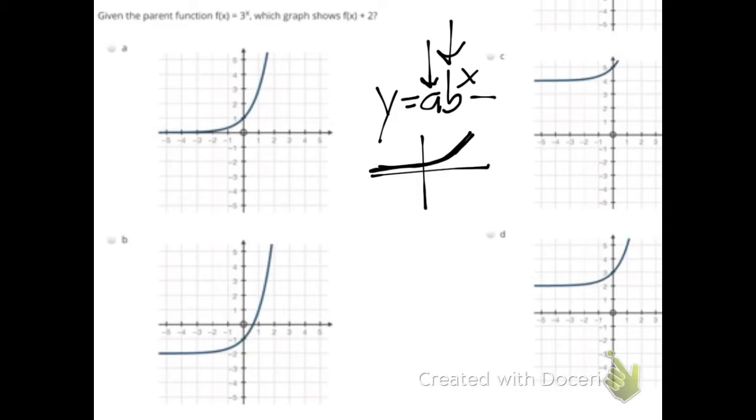Sometimes you'll see something where it's like plus k, where this will show you a vertical shift of going up or down.